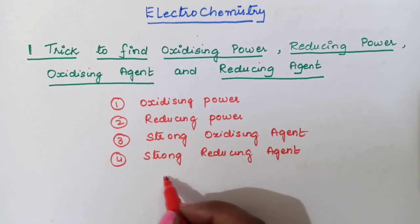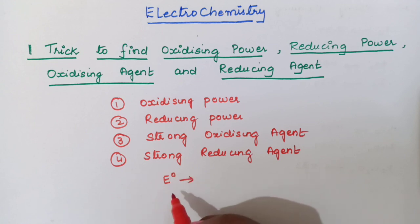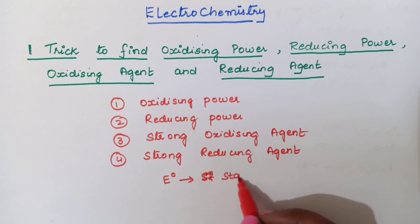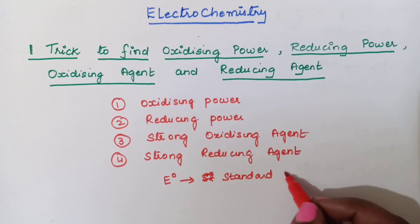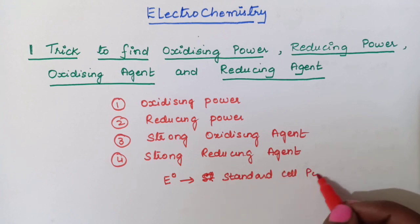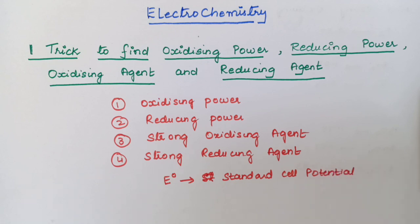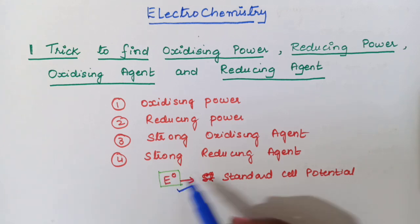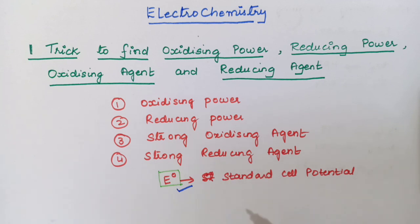For you, E0 value will be given. E0 value is standard cell potential. Based on this E0 value, you have to find all four. So I will tell you one simple trick — using that, you will be able to solve all these four questions.